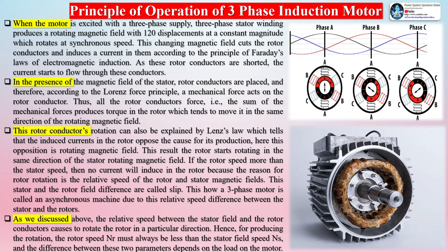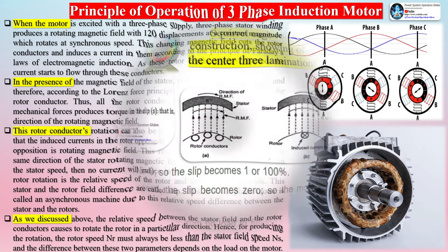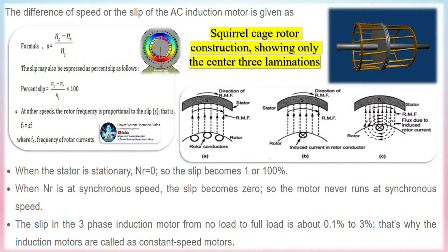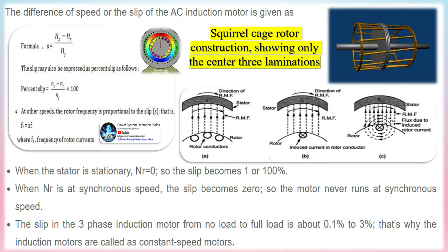Thus, the sum of the mechanical forces on all the rotor conductors produces torque in the rotor, which tends to move it in the same direction as the rotating magnetic field. This rotor conductor rotation can also be explained by Lenz's law, which states that the induced currents in the rotor oppose the cause of their production — here, the rotating magnetic field. As a result, the rotor starts rotating in the same direction as the stator's rotating magnetic field.